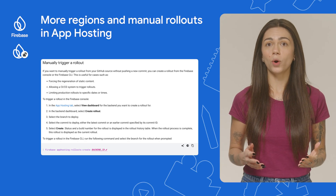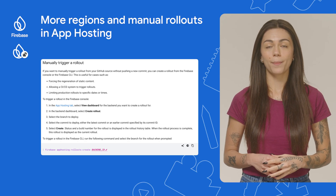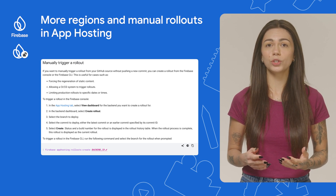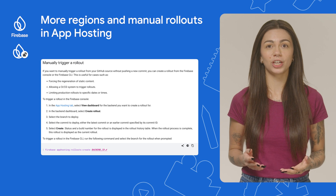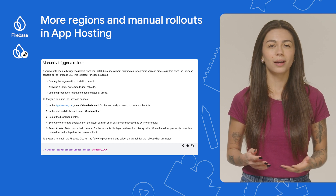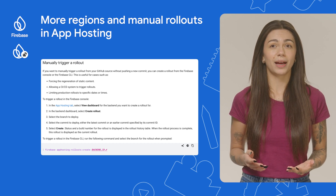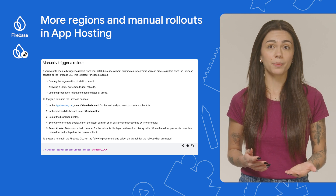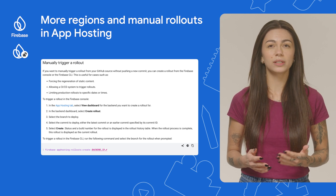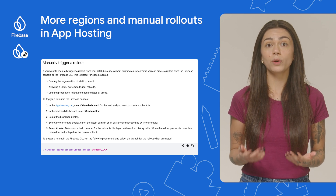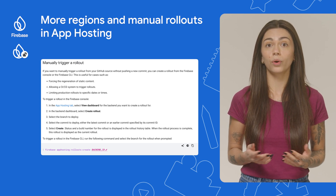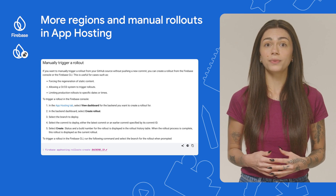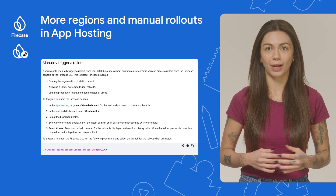There's one more update to App Hosting that I want to share with you: manual rollouts. App Hosting's GitHub integration lets you automatically deploy your app whenever you merge changes to your live branch. However, we recognize that sometimes you need more control over your production deployments — for example, you might want to roll out to production only on certain days of the week, or align your app deployment with other releases or marketing campaigns. So, to provide greater flexibility, App Hosting now supports manual rollouts.